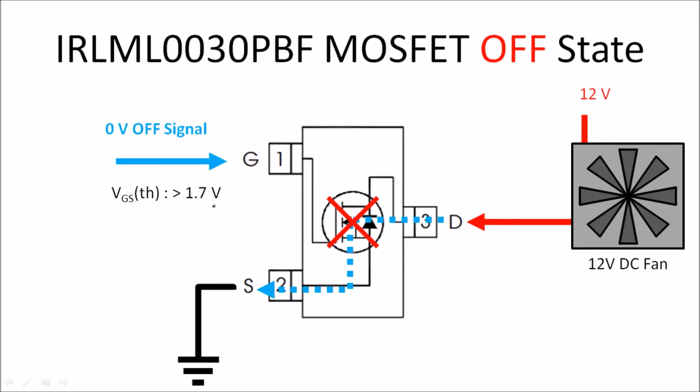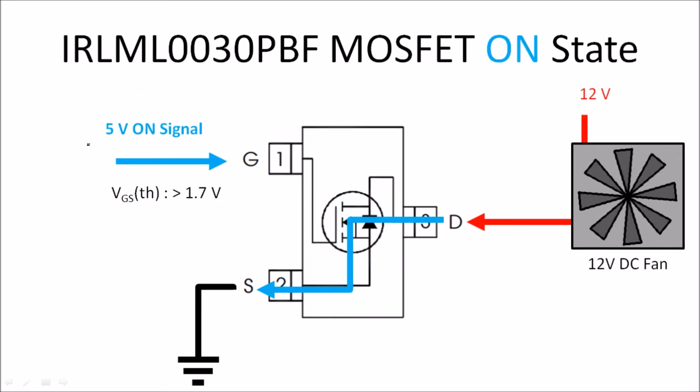To turn off the particular fan, what we do is we supply a zero volt off signal. Once that happens, it does not conduct anymore, so the drain and source remain separated. And once you supply a five volt or three volt signal, the fan turns on and this particular switch is turned on using a tiny signal coming out of our microprocessor.